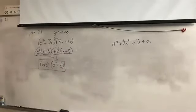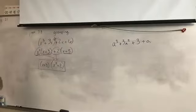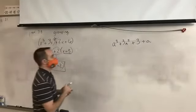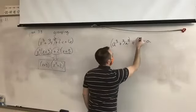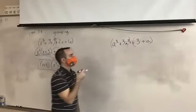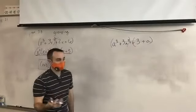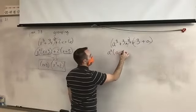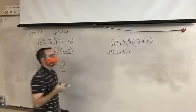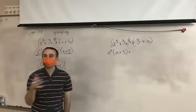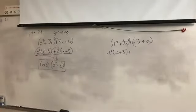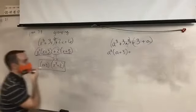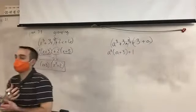Here's our next example: a to the third plus three a squared plus three plus a. I'll talk through it. First I group it — first two, last two. The GCF of the first two is a squared, and what's left in the parentheses is a plus three. Now I look at my last set — three and a. There's no GCF other than one, so I have to put a plus one out there. You have to take something out even if it's just a one.